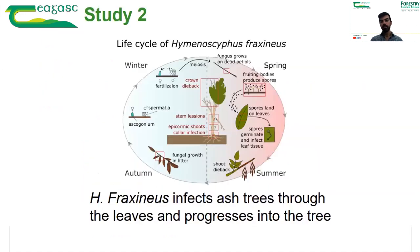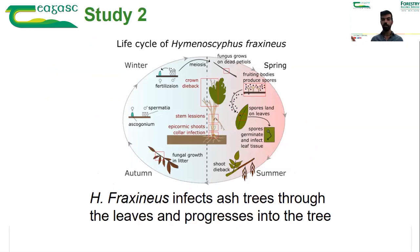For the second study, we looked at different ways in which Hymenoscyphus fraxineus can infect ash trees and cause ash dieback. Looking at the life cycle of the fungus: towards the end of spring and during the summer, it produces small mushroom fruit bodies in the forest soil. Spores from these fruit bodies are dispersed by the wind and brought up to the leaves.